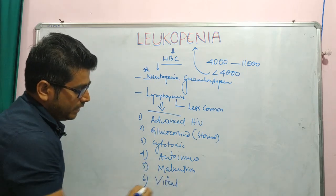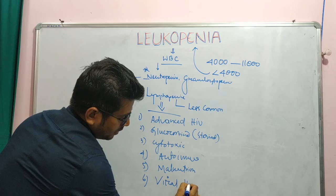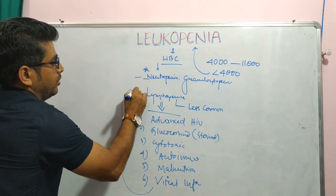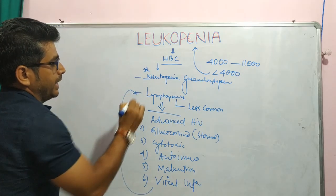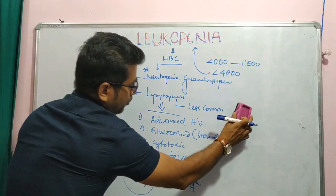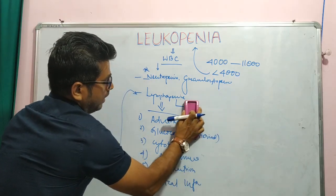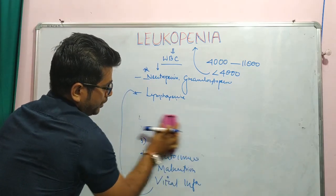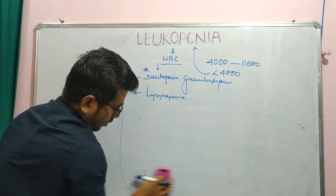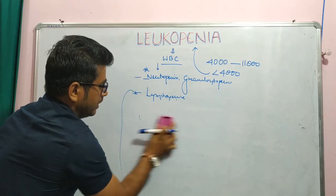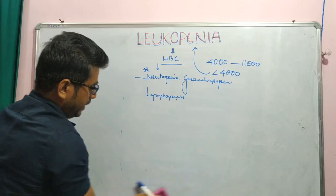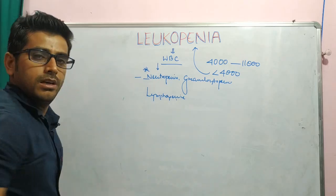Now we will discuss how viral infection causes lymphopenia. Robin says that in lymphopenia, it is not because of a decreasing number of lymphocytes — it is actually because of redistribution of the lymphocytes.